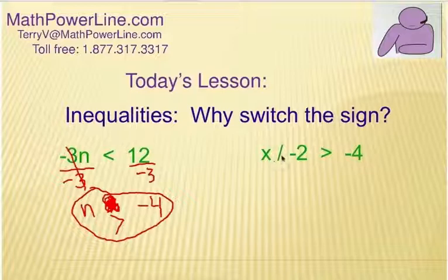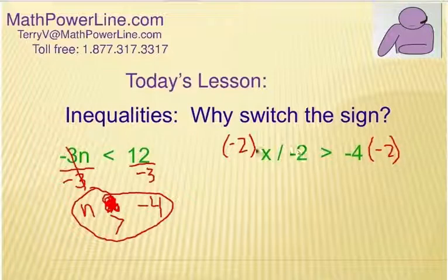All right, what about this? x divided by negative 2 is greater than negative 4. Well, to solve that, we are going to multiply both sides by the negative 2, right?